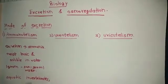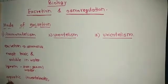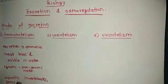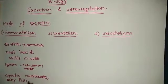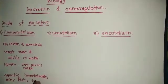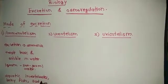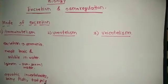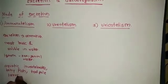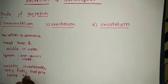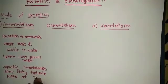Ammonotelism animals also include bony fish and tadpole larvae of frog.